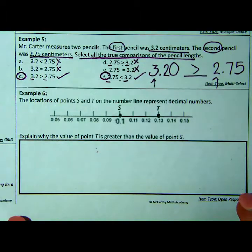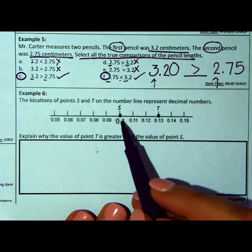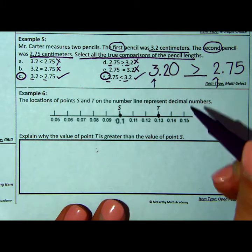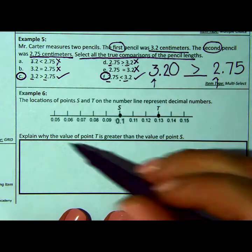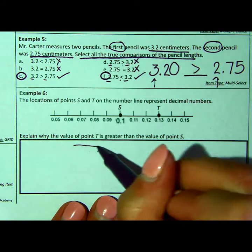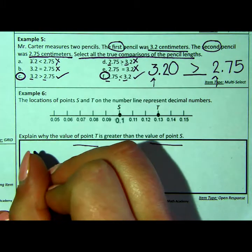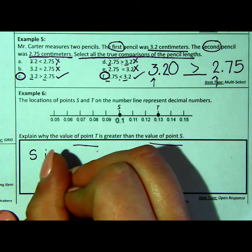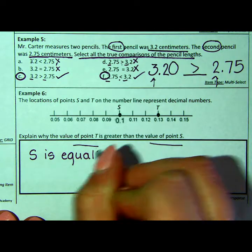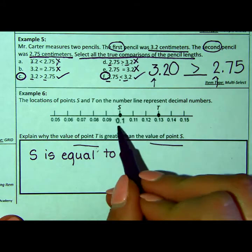All right. Let's look at the very last problem here. The locations of points S and T on the number line represent decimal numbers. Explain why the value of T is greater than the value of S. Well, let's look. S is equal to, now it looks like 0.1.